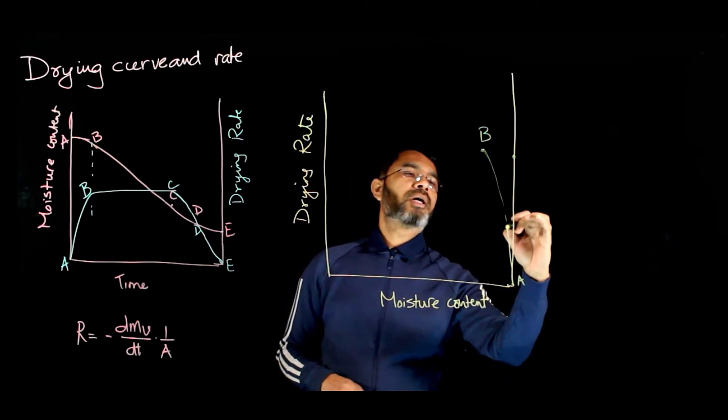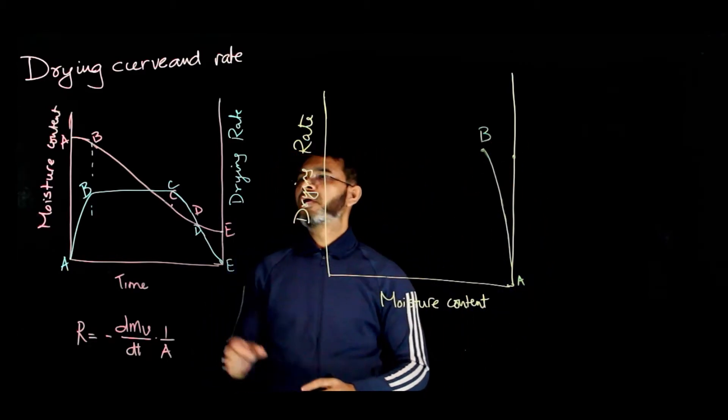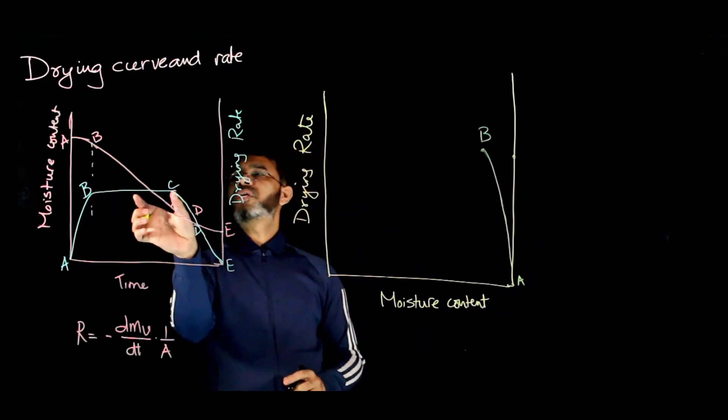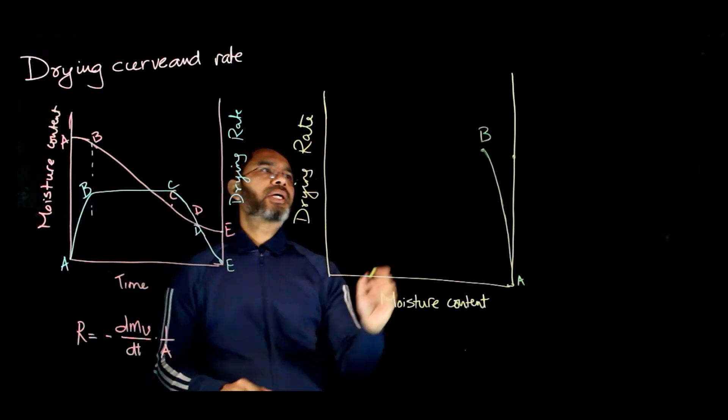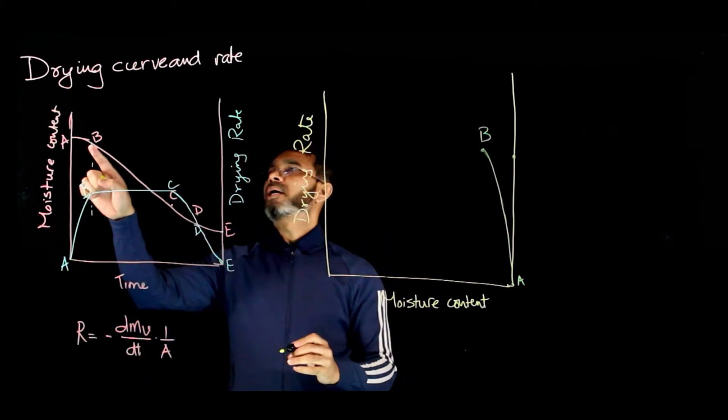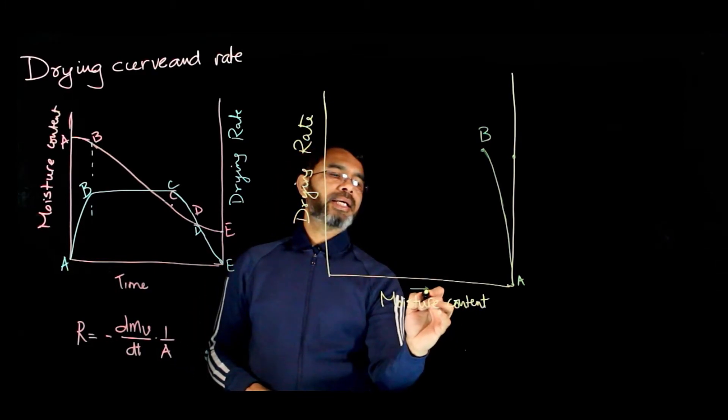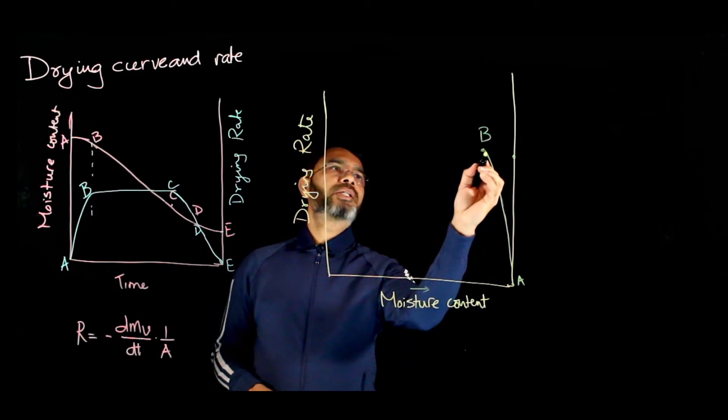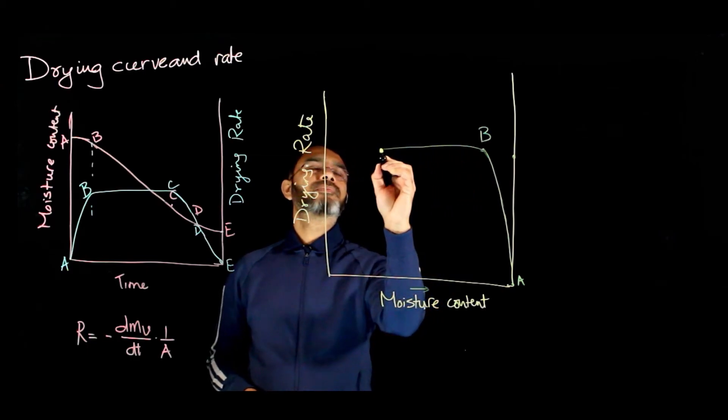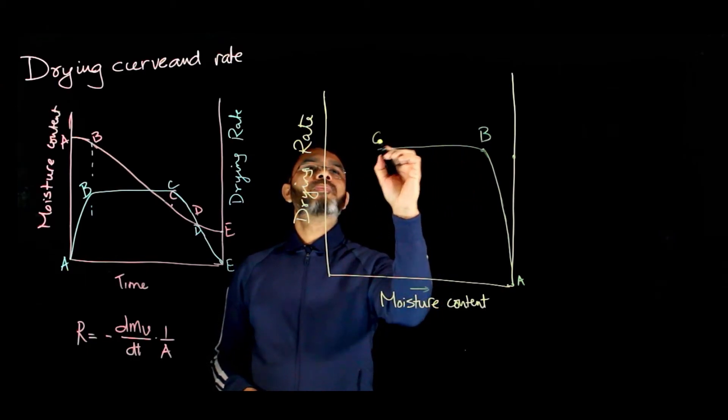From B to C, the drying rate remains constant while the moisture content is decreasing. Moisture content increases in this direction, so we have a horizontal line from B to C.